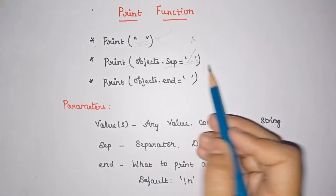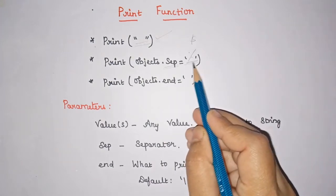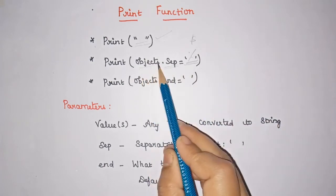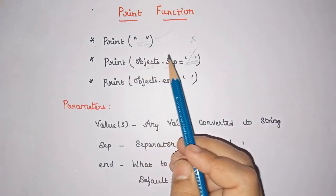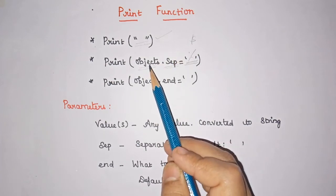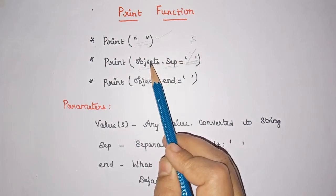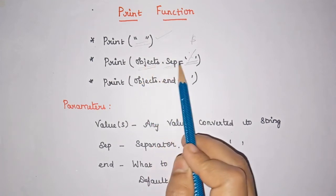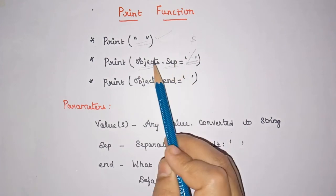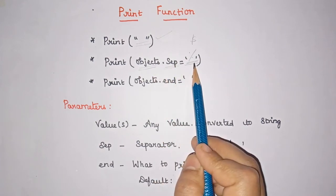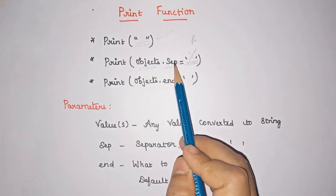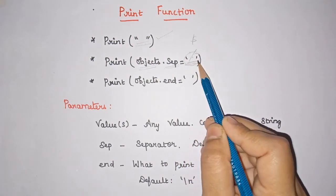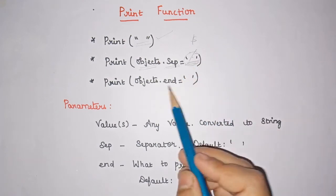If you don't give anything for sep, by default it will take an empty space as the separator. Python is an object-oriented language, so everything in Python is considered an object. The separator is an optional parameter — if you don't specify it, an empty space is used by default.